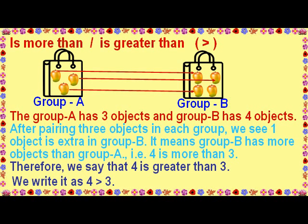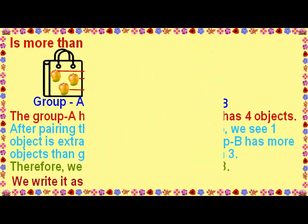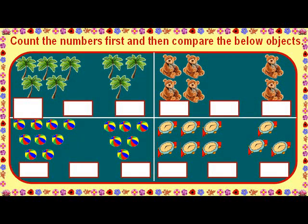Is more than, is greater than. Group A has 3 objects and Group B has 4 objects. After pairing three objects in each group, we see one object is extra in Group B. It means Group B has more objects than Group A, that is 4 is more than 3. Therefore we say that 4 is greater than 3. We write it as 4 > 3. Count the numbers first and then compare the below objects. 5 trees are more than 3 trees. 4 teddy bears are more than 2 teddy bears. 9 balls are more than 6 balls. 6 watches are more than 3 watches.